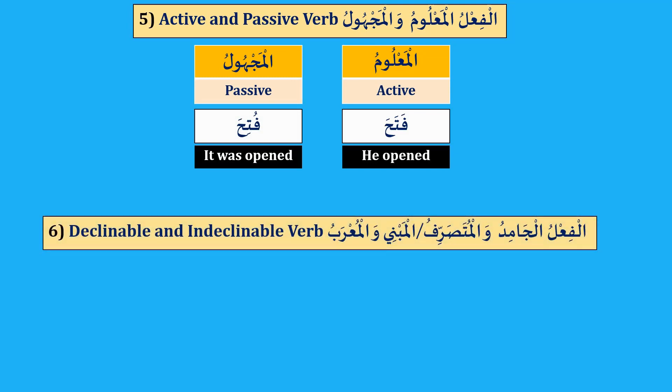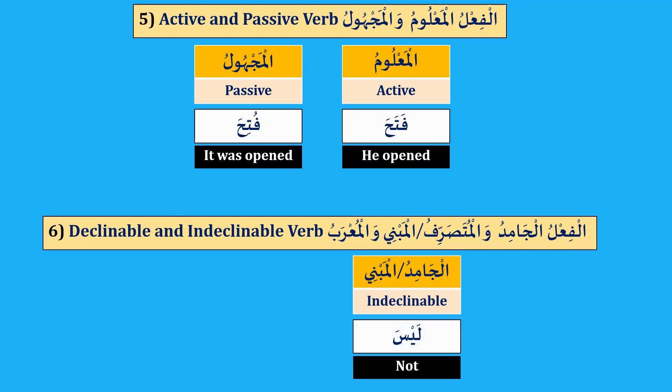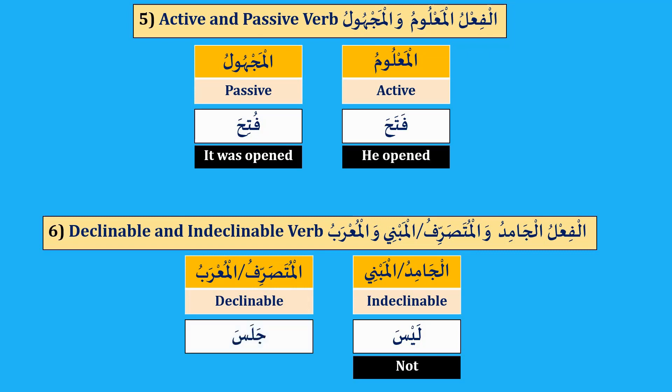The last category, number six: al-Fi'l al-Jamid wal-Mutasarrif, or al-Fi'l al-Mabni wal-Mu'rab, declinable and indeclinable verb. Al-Jamid or al-Mabni, indeclinable — leysa, meaning 'not'. This is a verb in Arabic that is not derived; it doesn't have present and imperative tense, only past tense — leysa. Al-Mutasarrif or al-Mu'rab, declinable verb — jalasa, he sat. We can use the present tense and imperative of this verb.